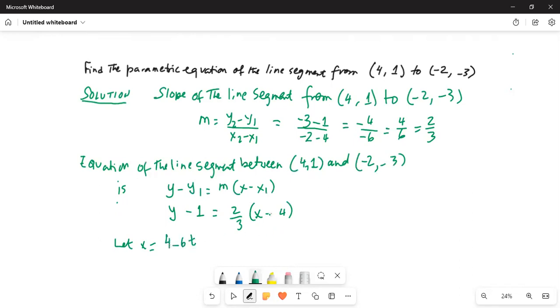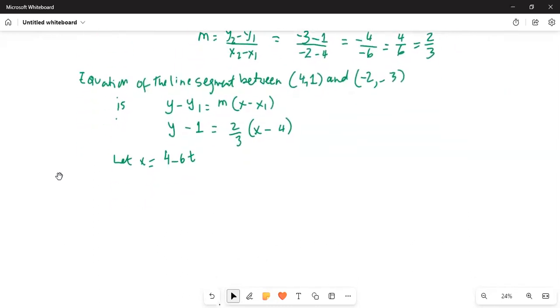So y minus 1 equal to 2 thirds times (4 minus 6t minus 4).